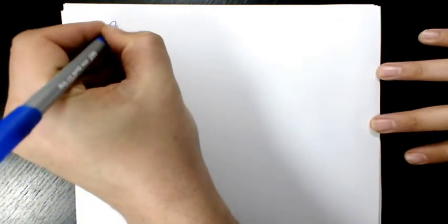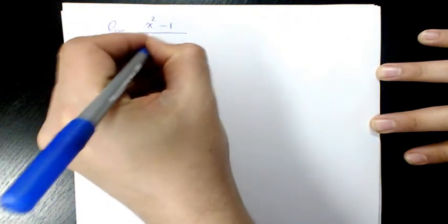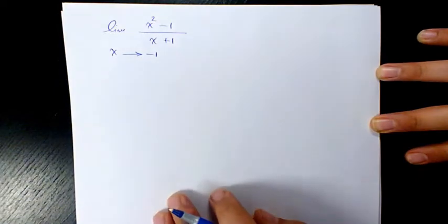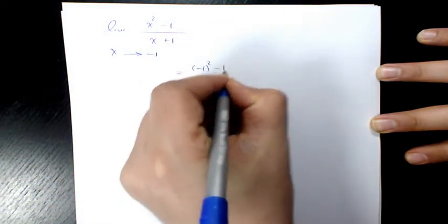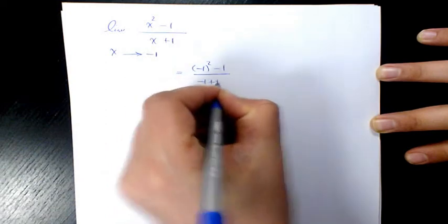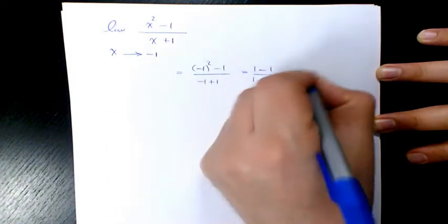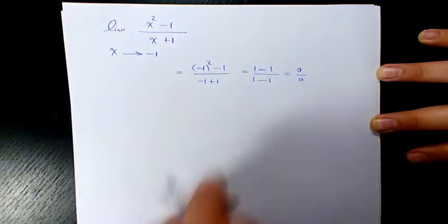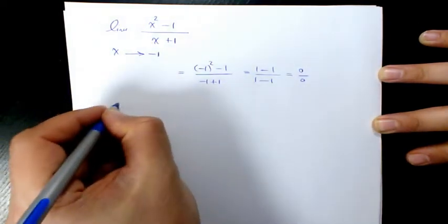Next example is the limit of (x squared minus 1) over (x plus 1) when x is approaching negative 1. In this case it's going to be (negative 1 squared minus 1) over (negative 1 plus 1), which is 0 over 0. Whenever it's 0 over 0, it means we need to look for factoring or rationalizing.